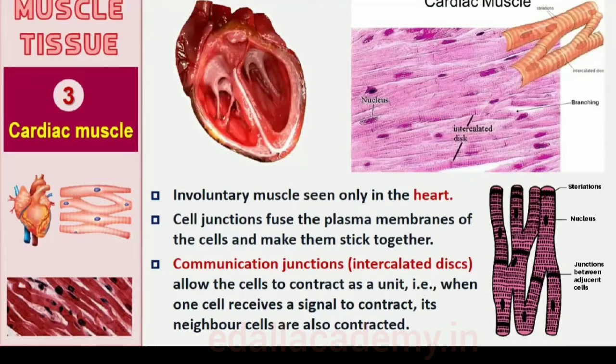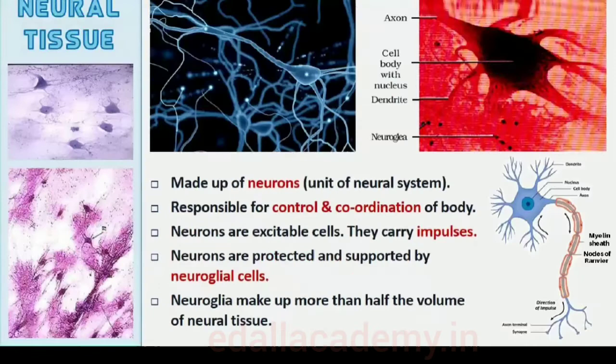7.1.4 Neural Tissue. Neural tissue exerts the greatest control over the body's responsiveness to changing conditions. Neurons, the unit of the neural system, are excitable cells. The neuroglial cells, which constitute the rest of the neural system, protect and support neurons. Neuroglia make up more than one half the volume of neural tissue in our body. When a neuron is suitably stimulated, an electrical disturbance is generated which swiftly travels along its plasma membrane. Arrival of the disturbance at the neuron's endings, or output zone, triggers events that may cause stimulation or inhibition of adjacent neurons and other cells.